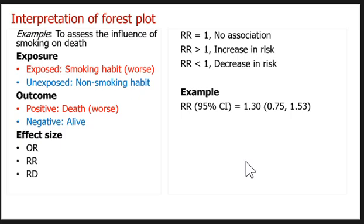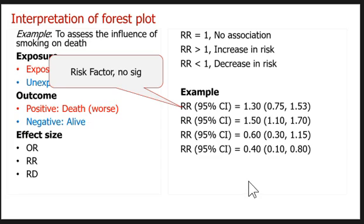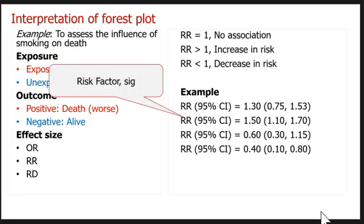For example, if the risk ratio is 1.3, which is greater than 1, it is clearly a risk factor. Based on the first example, this is a risk factor but not significant because the confidence interval contains 1 — the lower value is less than 1 and upper value is greater than 1. However, based on the second example, the risk ratio is 1.50, greater than 1, and the confidence interval does not contain 1 — both lower and upper values are greater than 1.